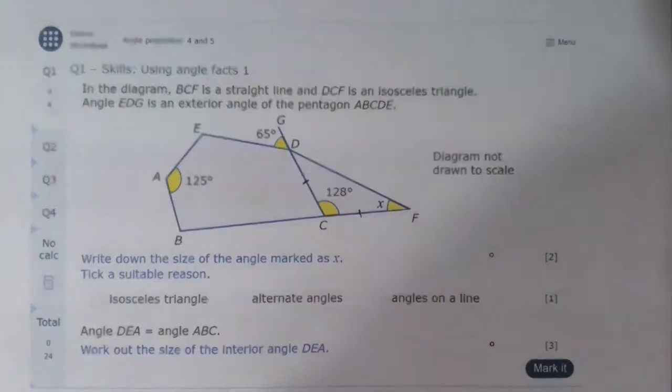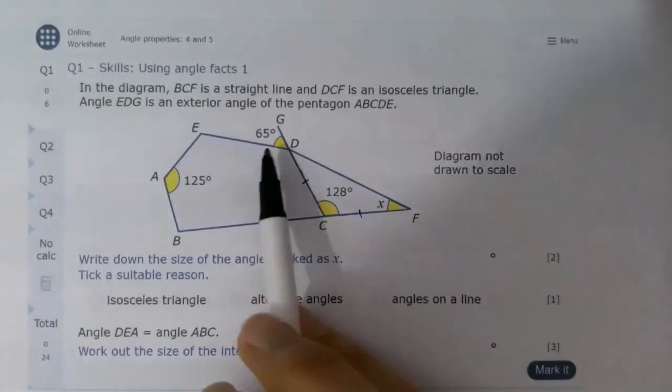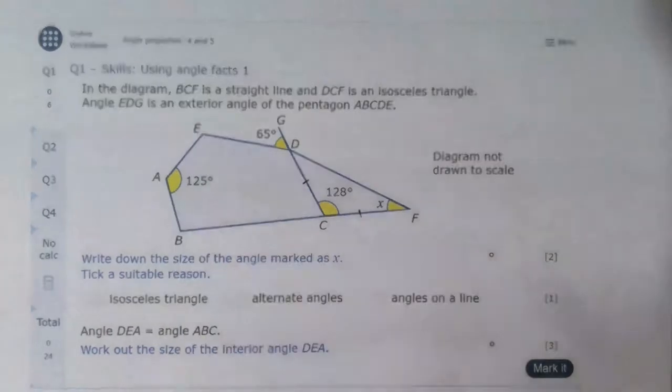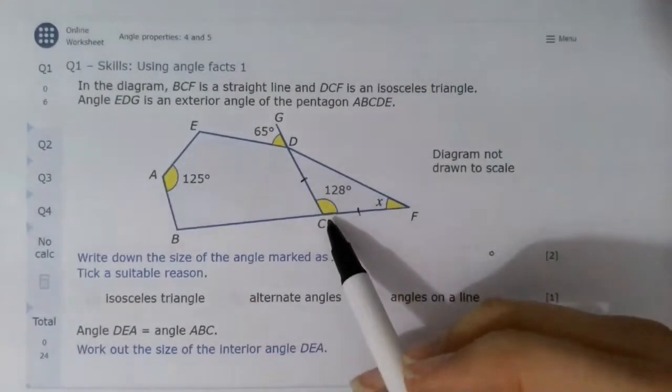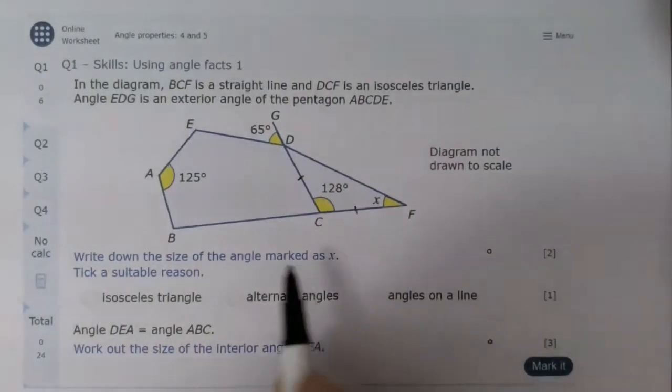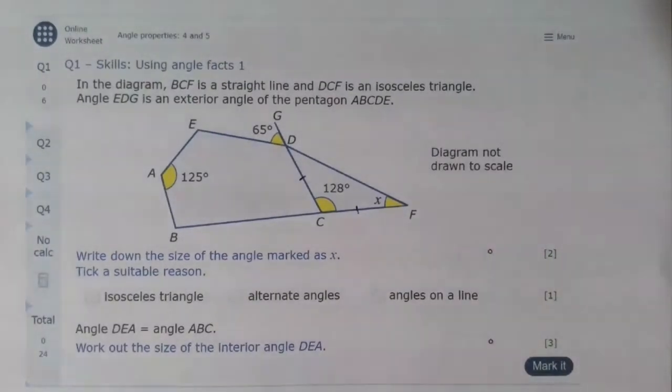Angle EDG is an exterior angle of the pentagon ABCDE. That's already marked on. We can see it's an exterior angle, which means that CDG must also be a straight line. We need to find the angle marked as x and we need to tick a suitable reason.